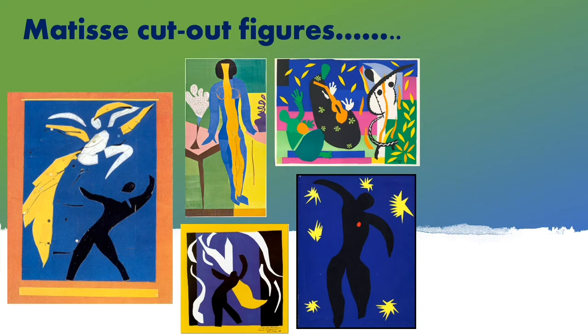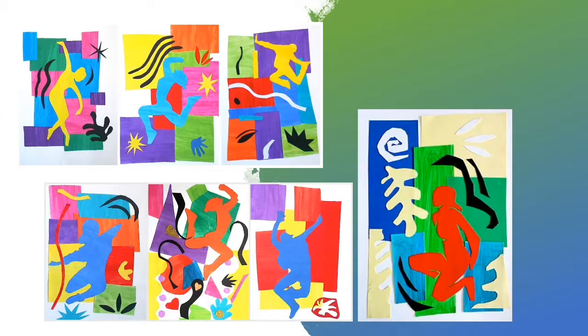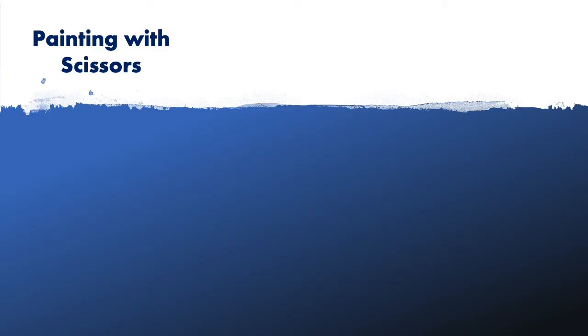Matisse also focused on cut-out figures, and I want us to incorporate this into our work using The Greatest Showman as inspiration. Take notice of how he cuts out silhouetted figures that quite often capture movement. You can do this by focusing on the poses of the figures. We want our work to be really bright and bold, full of movement and lots of layers, to create a fun, lively-looking piece of work.